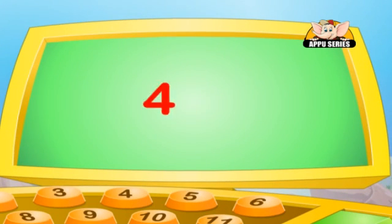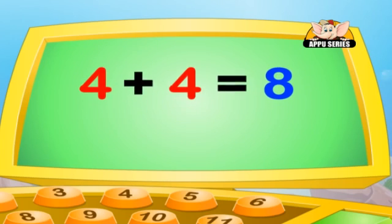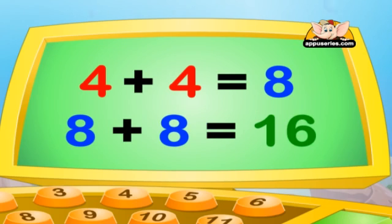If the number is 4, its double will be 4 plus 4, which is equal to 8. And if we further double it, it would be 8 plus 8, which equals 16.